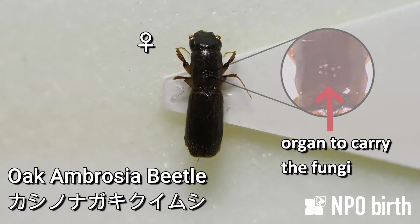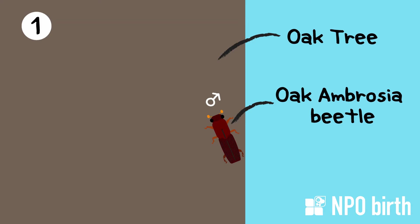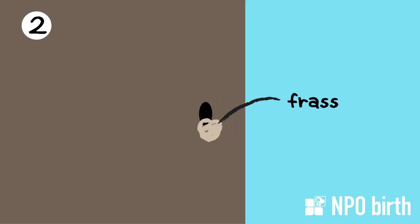Now, let me tell you about the life cycle of the Oak Ambrosia Beetle. In the summer, they come out of the tree for mating and look for their new home — an old and healthy oak tree. First, the male digs a hole on the tree trunk. The wood dust, or frass, comes out when digging the hole.